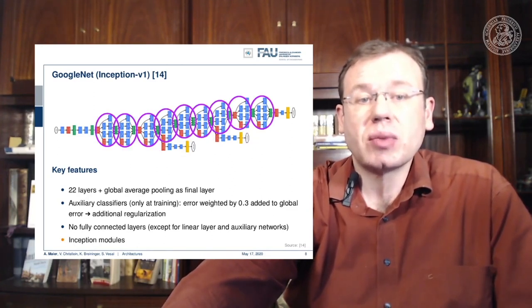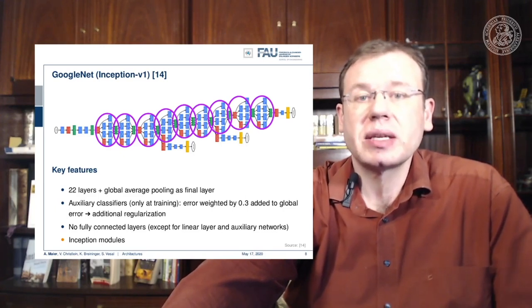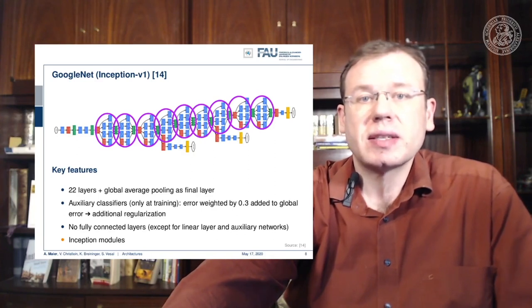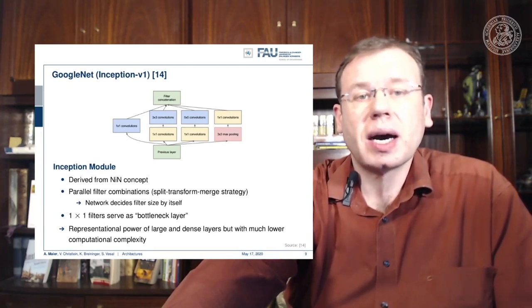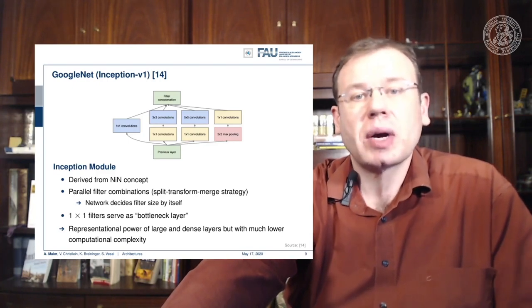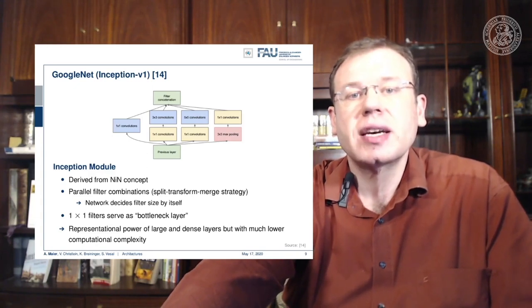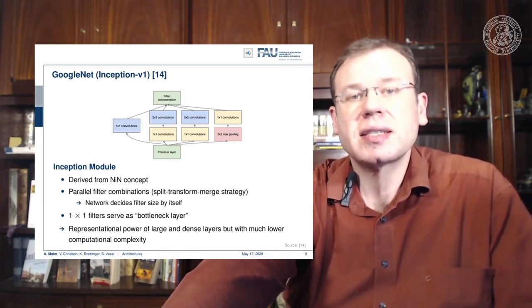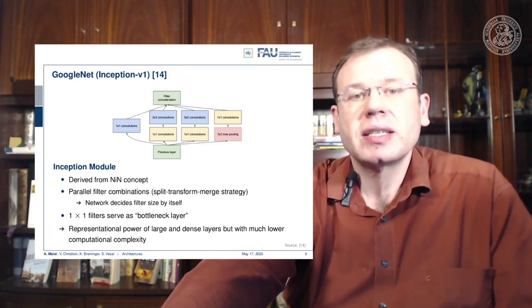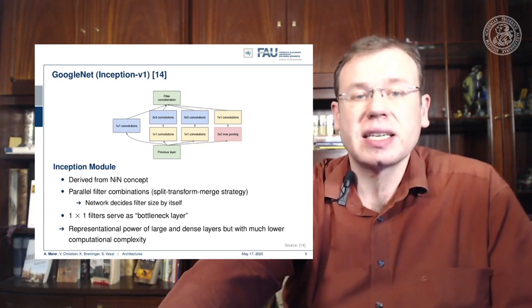The inception modules have survived for quite some time and are still used in many state-of-the-art deep learning models. There are different branches: a 1×1 convolution only, a 1×1 followed by a 3×3 convolution, a 1×1 followed by a 5×5 convolution, or max pooling followed by a 1×1 convolution. All these branches run in parallel, and the outputs are concatenated and offered to the next layer. This allows the network to decide which branch to trust, essentially determining whether it wants to pool or convolve — an automatic routing determined during training.